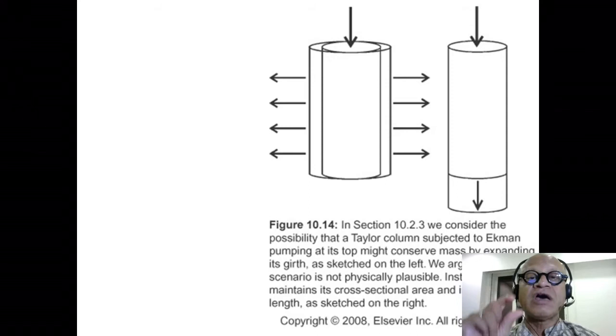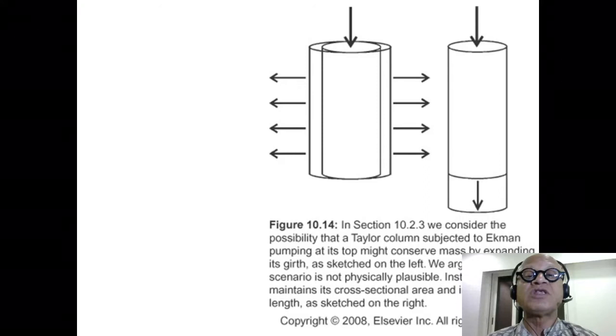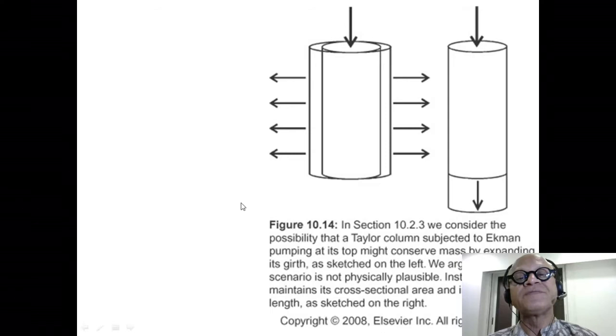So how is it that we can have Taylor columns at all in the ocean? You should have, if there are Taylor columns and the Taylor-Proudman theorem is valid, then above the mid-ocean ridge, for example, it should be as if the ridge is extending all the way to the surface and there is a stagnant layer. What then happens?